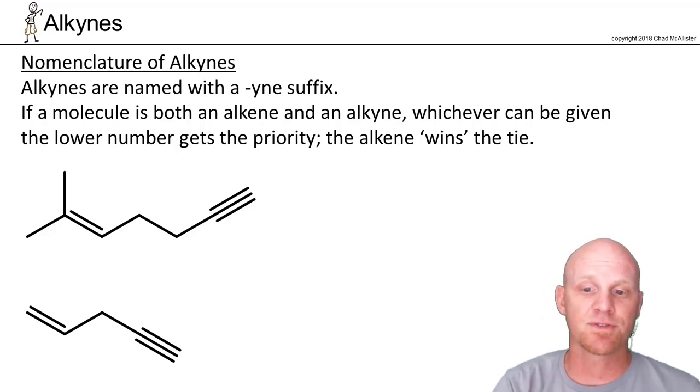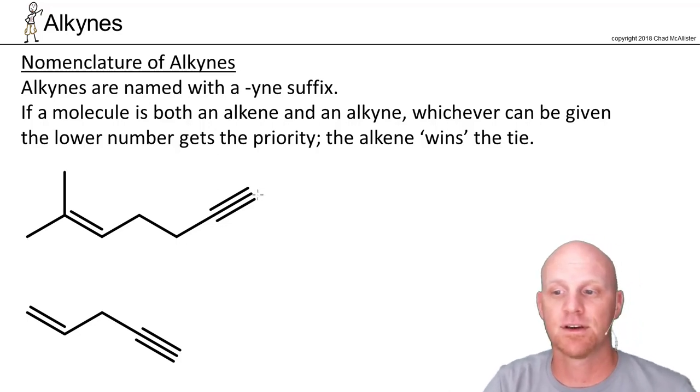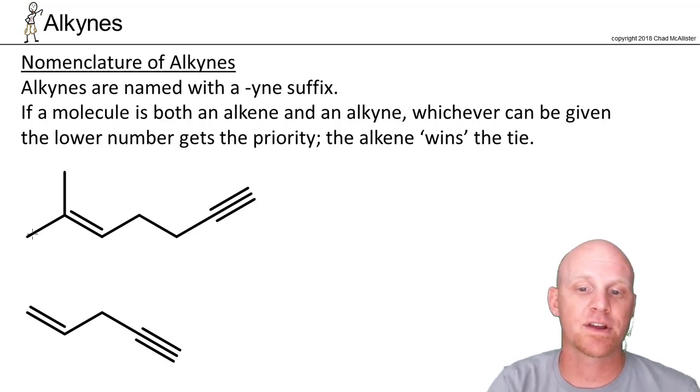In this case, the longest chain that has both the alkene and the alkyne in this first example is seven carbons, so some sort of a hept for the parent chain. If I number it left to right, the alkene's at 2. If I number right to left, the alkyne's at 1. That's the winner.